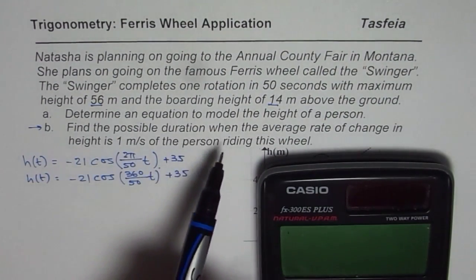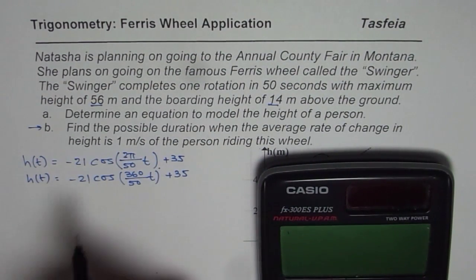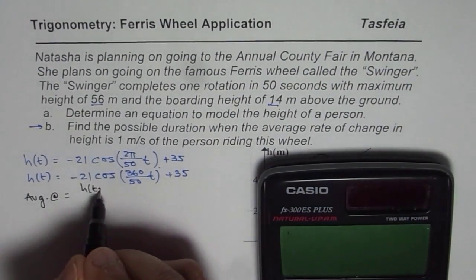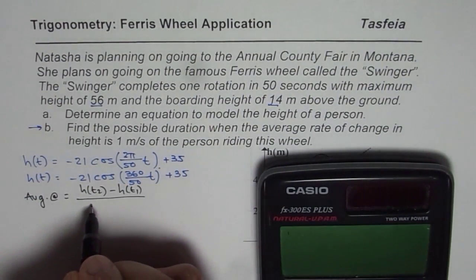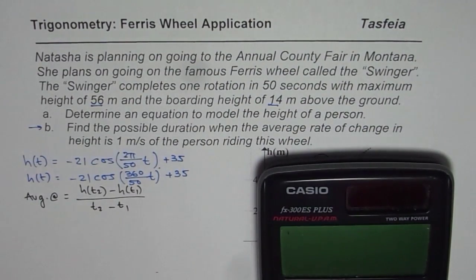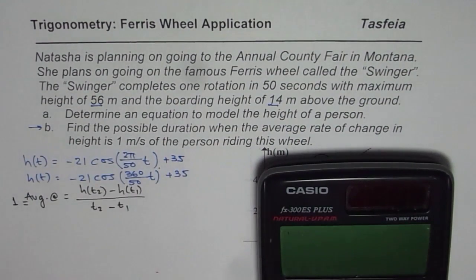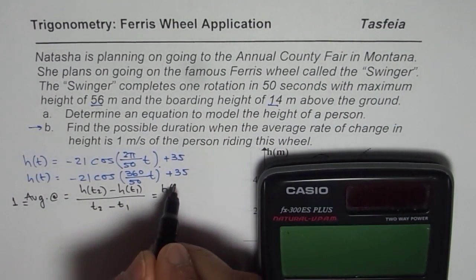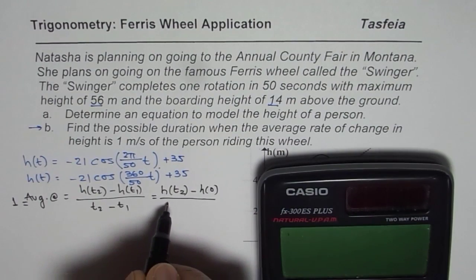Now, find the possible duration when the average rate of change in height is 1 meter per second. The average rate of change is h(t₂) − h(t₁) divided by t₂ − t₁. We are given this average rate of change as 1 meter per second — height is in meters, time is in seconds. To make the problem simpler, we will assume t₁ to be 0, giving us h(t₂) − h(0) divided by t₂ − 0.